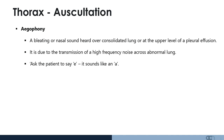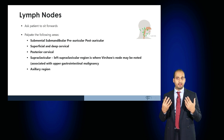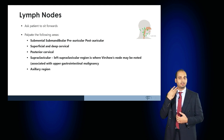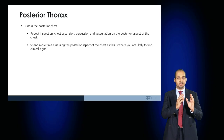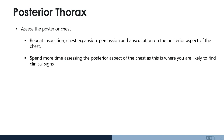Once you've inspected, palpated, percussed, and auscultated the thorax, move on to examine the lymph nodes. Ask the patient to sit forward and carefully palpate the submental and submandibular, preauricular, postauricular, superficial and deep cervical, posterior cervical, supraclavicular, and axillary nodes — any lymphadenopathy may suggest underlying neoplasia. Once the patient is sitting forward, examine the posterior thorax as you did for the anterior thorax: inspection, chest expansion, percussion, and auscultation, spending a lot of time as many signs including scars may be found there.